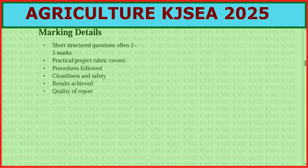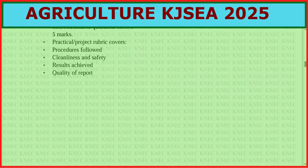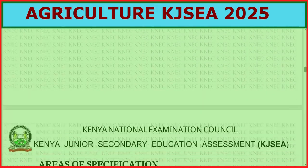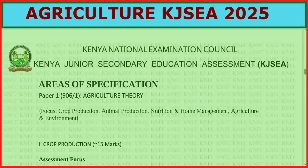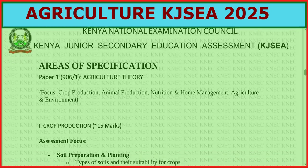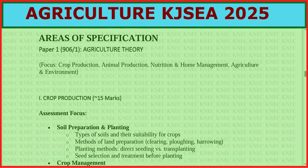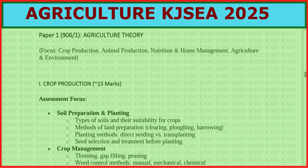Marking details: short structured questions carry 2 to 5 marks; practical rubric covers procedures followed, cleanliness and safety, resource quality, and report writing. Areas of specification to focus on are: crop production, animal production, nutrition and home management, and agriculture and environment.